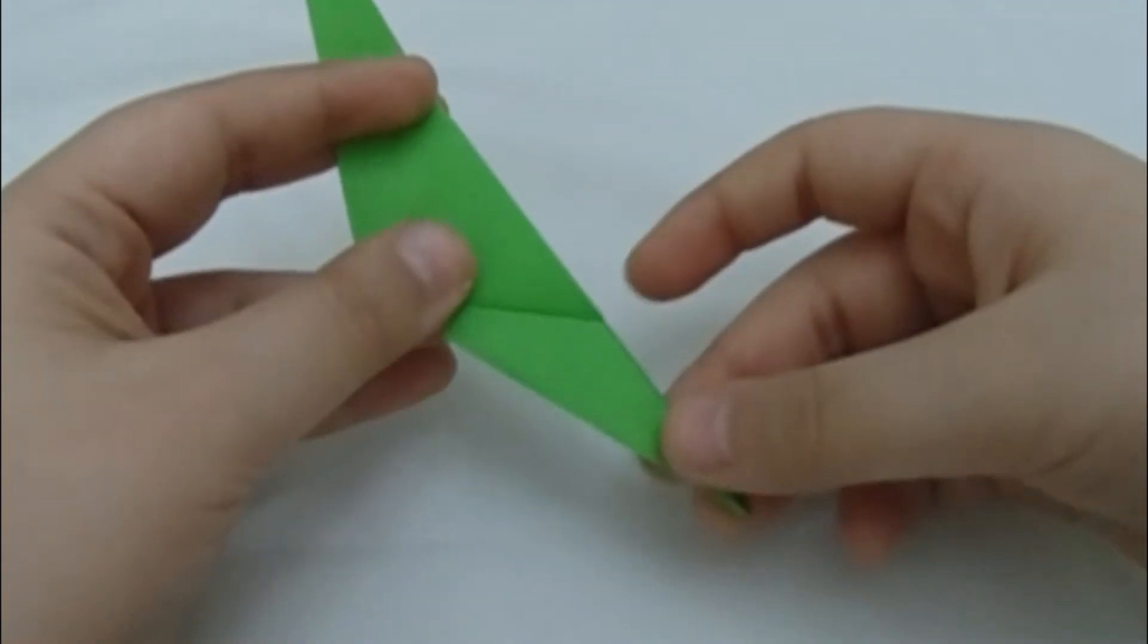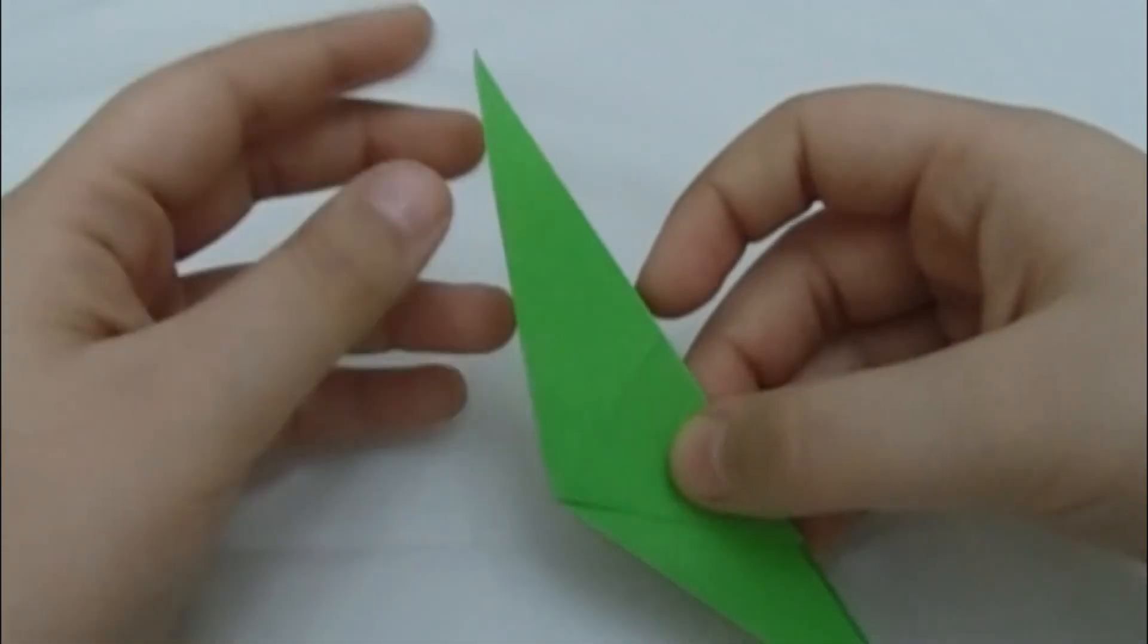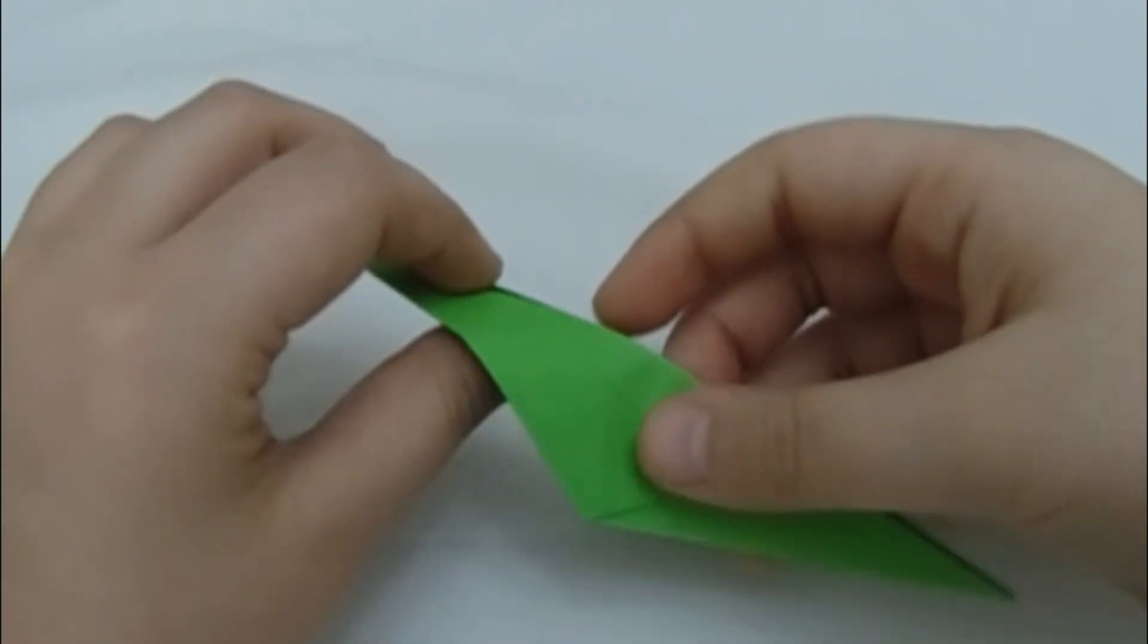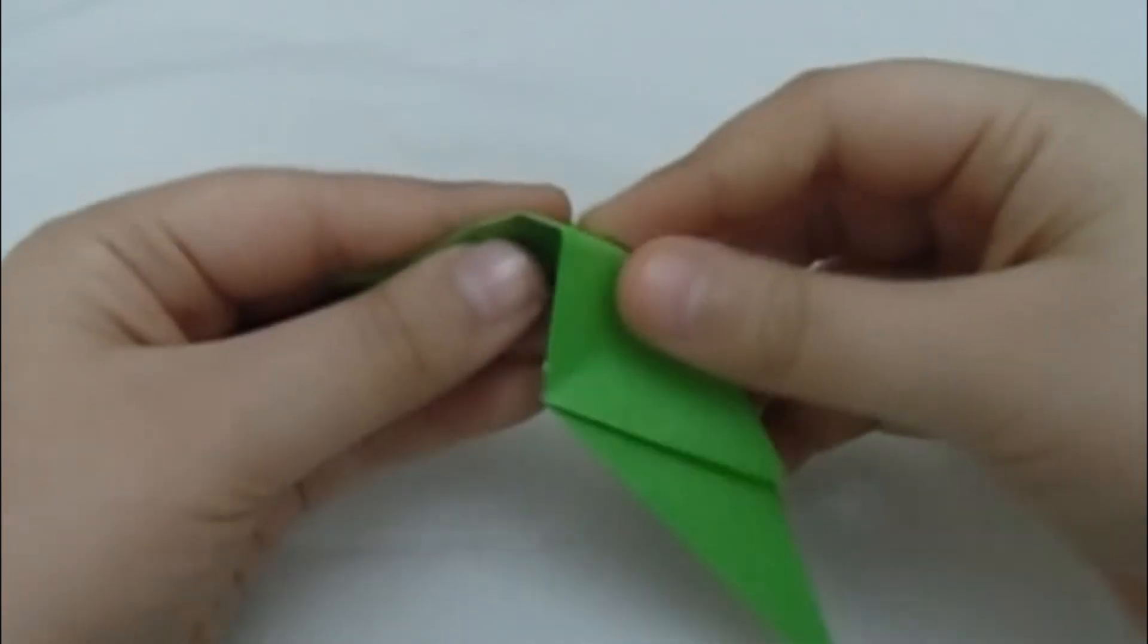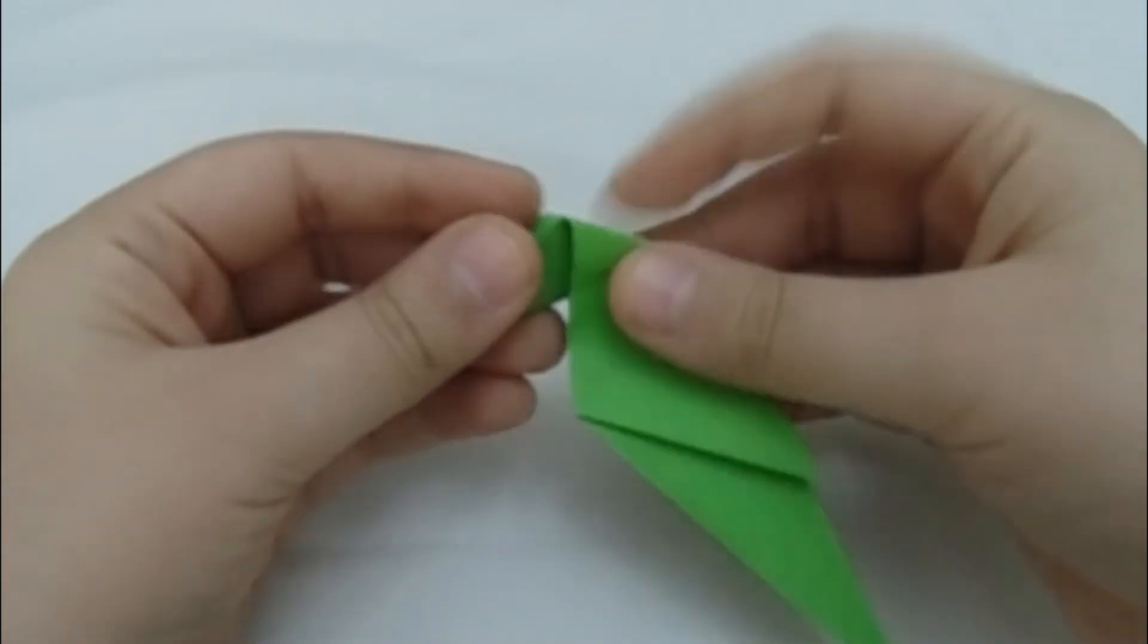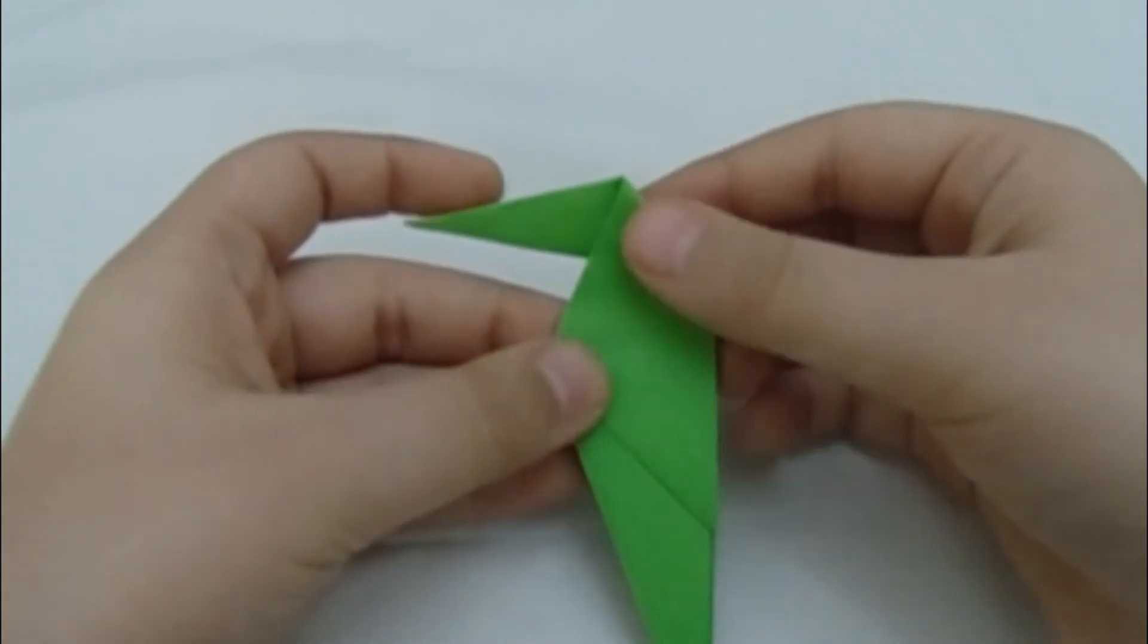Now let's work on the head. So to do the head, just make a random reverse fold like this. This is how that should look. Just crease it hard.